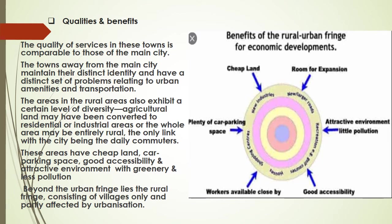The areas in rural areas also exhibit a certain level of diversity. Agricultural land may have been converted to residential or industrial areas, or the whole area may be entirely rural, with the only link to the city being daily commuters. Even because of rural urban fringe, there is some development in rural areas — land converted to residential or industrial form, and roads being created to link rural areas to the city.